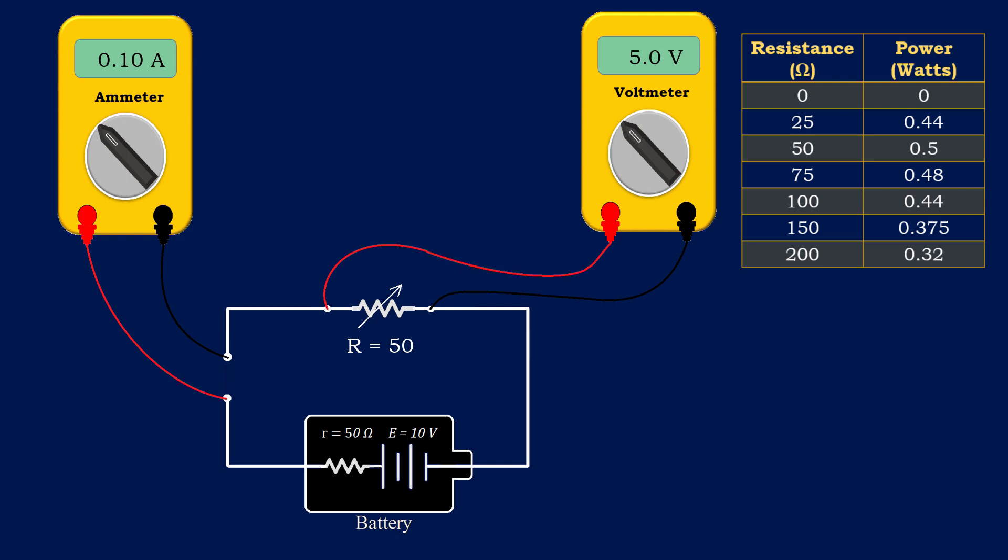If we increase the resistance of the variable resistor to 50 ohms, then the reading of the voltmeter becomes 5 volts and the current would become 0.1 amperes, and so on.